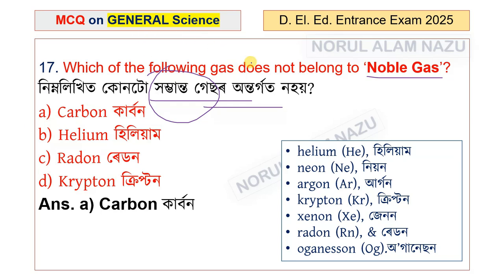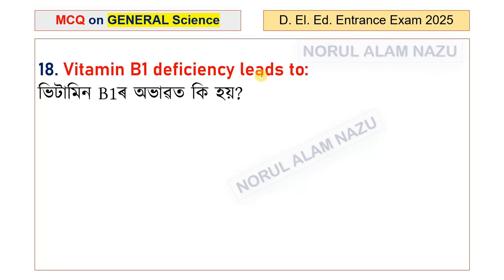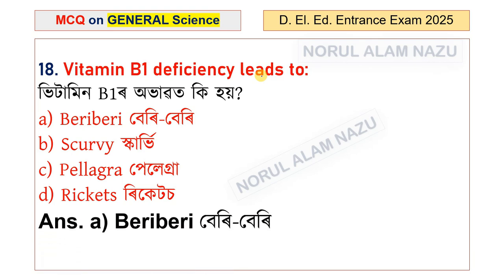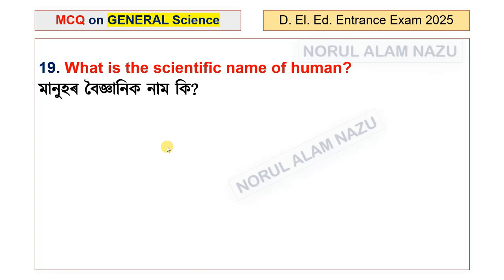Question number 18: Vitamin B1 deficiency leads to beriberi. The options also include pellagra, scurvy, and rickets. The answer is beriberi. Question 19: Scurvy is a vitamin deficiency disease caused by deficiency of vitamin C.